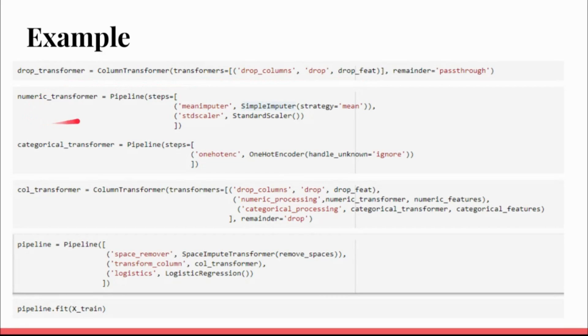Then I am taking all the numerical features and sending them to the pipeline which does imputing based on the mean and then does standard scaling. Similarly for categorical, I am just doing one-hot encoding of the variables. These two numerical and categorical transformers, I am putting in another column transformer and including the drop column, the numerical processing, and the categorical processing. So now I have the transformer object.